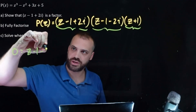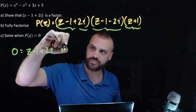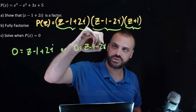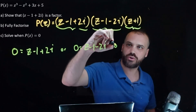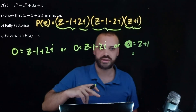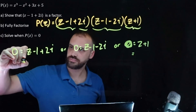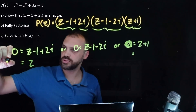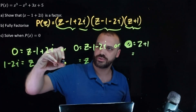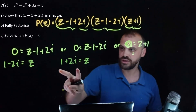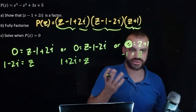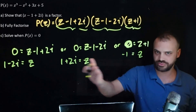So 0 equals z minus 1 plus 2i, or 0 equals z minus 1 minus 2i, or 0 equals z plus 1. Our three solutions are: z equals 1 minus 2i, or z equals 1 plus 2i, or z equals negative 1.